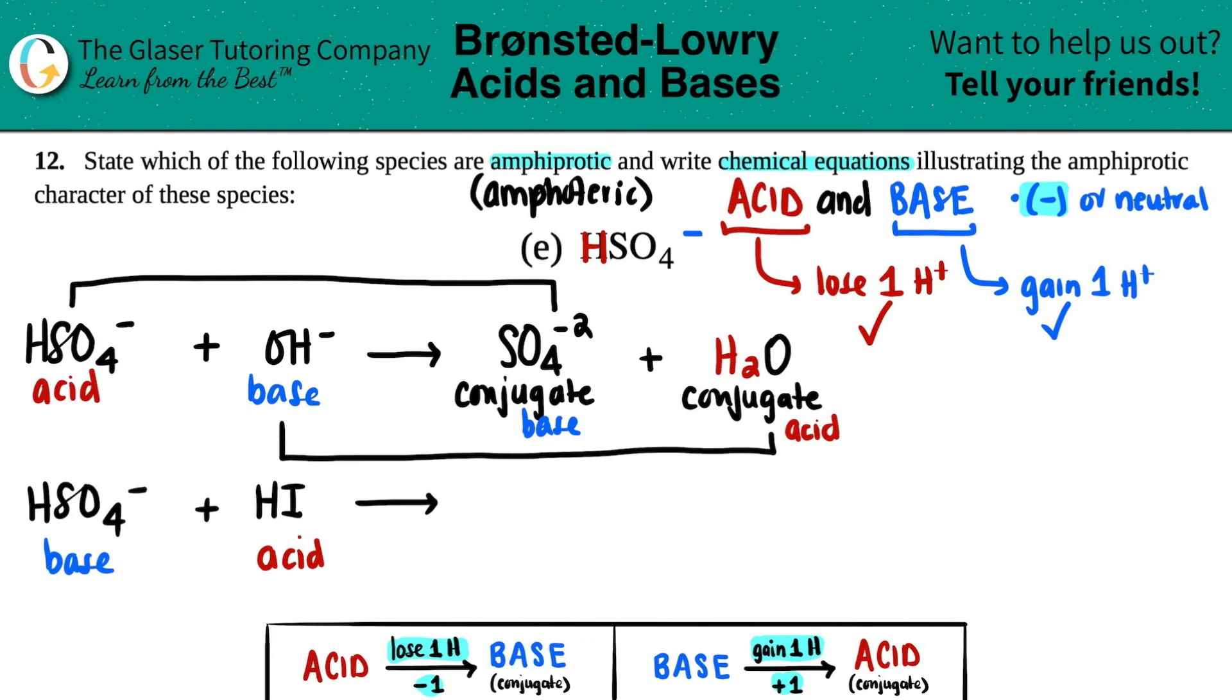Now we just have to do the same thing for the bottom one. Remember, bases gain a hydrogen so they turn into their conjugate acids, and then on the flip side, the acid since it loses the hydrogen, that turns into the conjugate base.